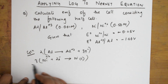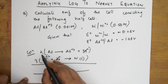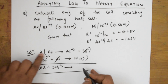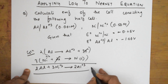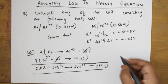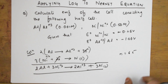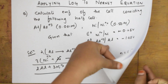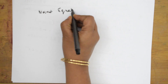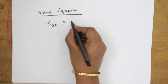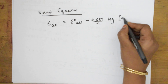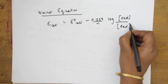After balancing, the overall reaction becomes: 2Al + 3Ni²⁺ → 2Al³⁺ + 3Ni(solid). The number of electrons transferred, n, equals 6. Now we apply the Nernst equation: E_cell = E°_cell − (0.059/n) × log([oxidized]/[reduced]).